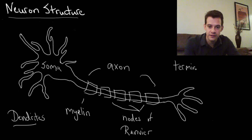At this point it reaches the terminal buttons. And so the terminal buttons are these little arms reaching out here, and this is where the neuron connects to other neurons.